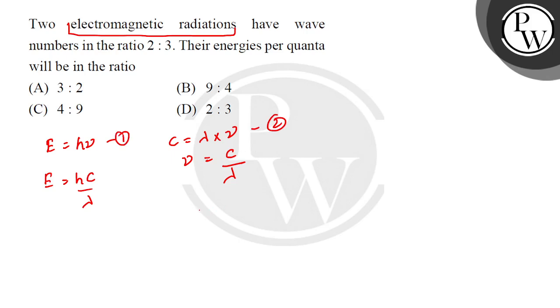Third equation, what happens? Wave number is equal to 1 upon wavelength. So if you look at the wave number, it is the reciprocal of wavelength. You mean that per unit distance, how many waves are passing? We call this the wave number. So here, 1 upon λ, I can write E is equal to hc·ν̄. ν̄ is our wave number, wave number.